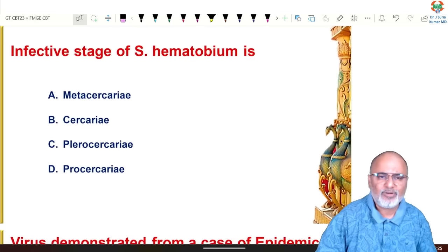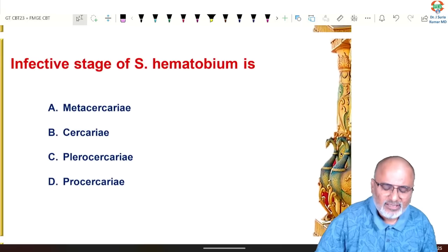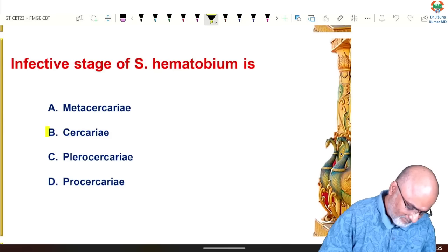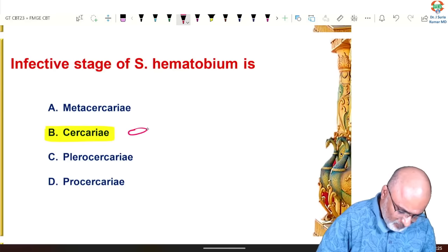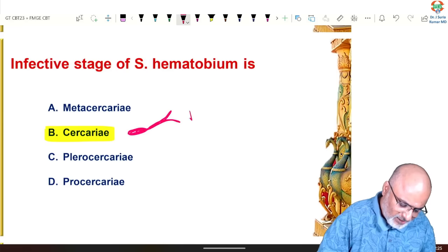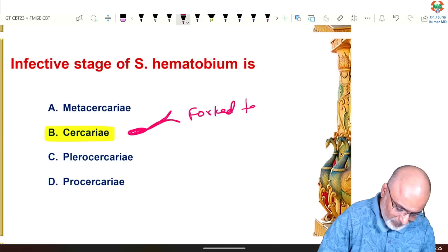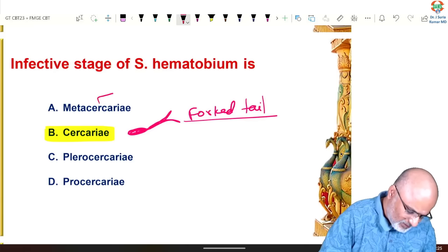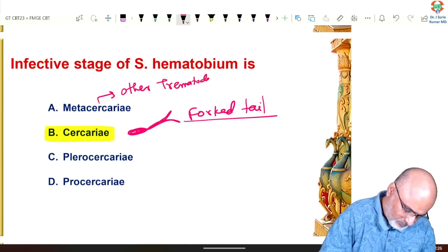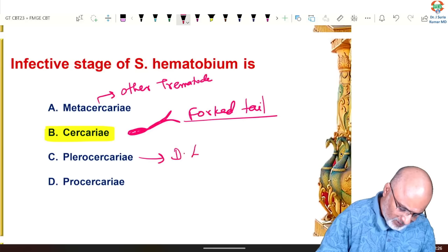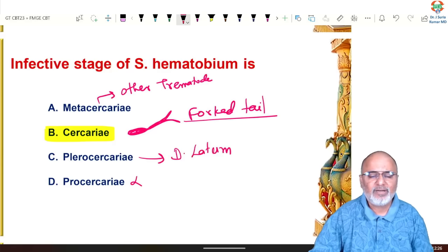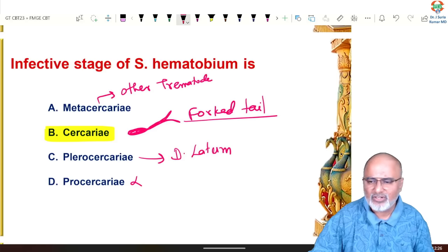The infective stage of Schistosoma haematobium — any Schistosoma — is cercariae, specifically fork-tailed cercariae. For other trematodes the infective stage is metacercariae. For Diphyllobothrium latum the infective stage is plerocercoid larva; the procercoid is the first larval stage but the infective stage is the plerocercoid.